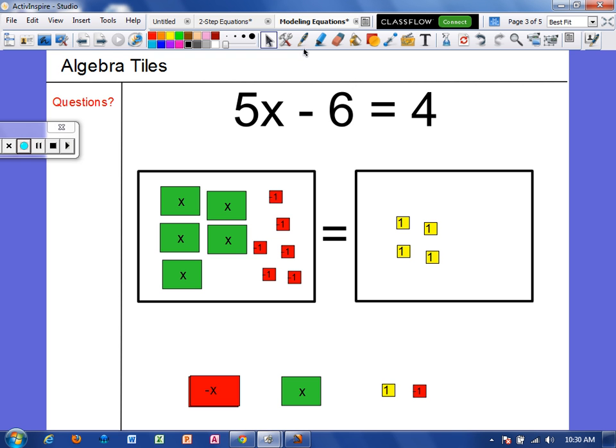Now again, the first step of solving an equation is to use an inverse operation to move the constant. So the inverse of subtracting 6 is to add 6. So I'm going to add 6 positives to the left side and 6 positives to the right side. Okay, so now that we've added 6 positives on each side, we see that we have some zero pairs. And we know that zero pairs obviously make zero. So we can go ahead and just cancel all of those out. So now we are left with 5x on the left and a positive 10 on the right.